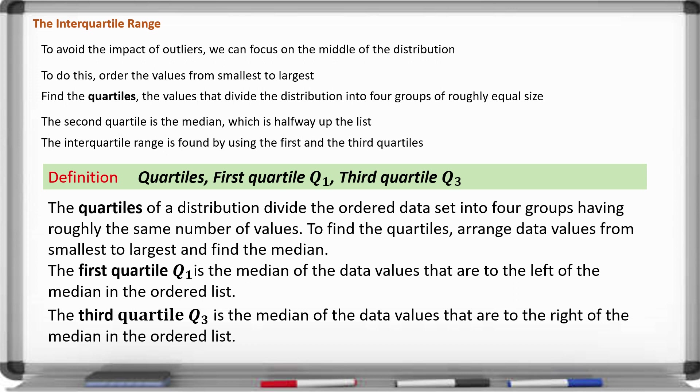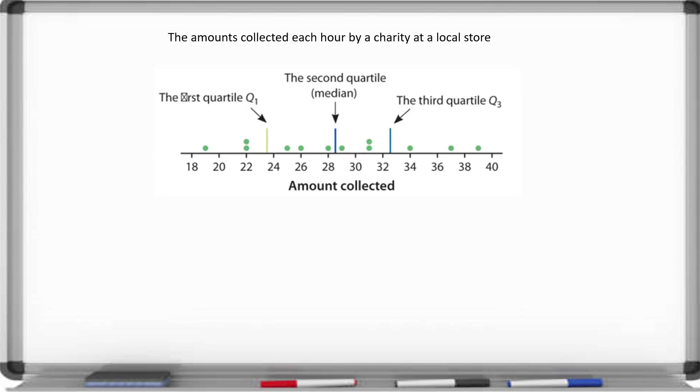Looking at the data set showing amounts collected each hour by a charity at a local store, notice that the second quartile or median cuts the data directly in half. To the left of that median there are six dots, and to the right there are six dots as well — we cut the data into two equal pieces with six data points on each side.